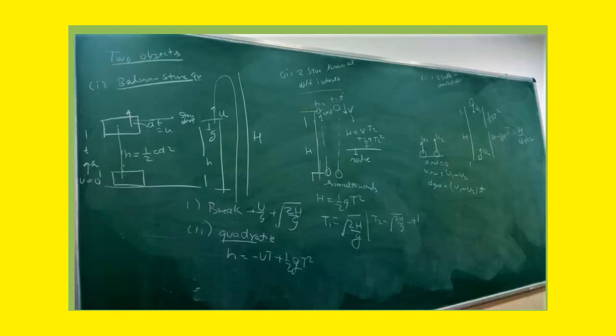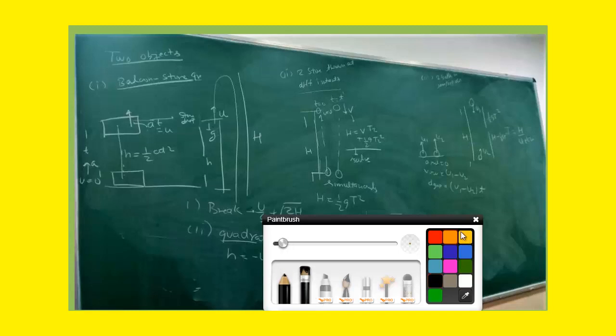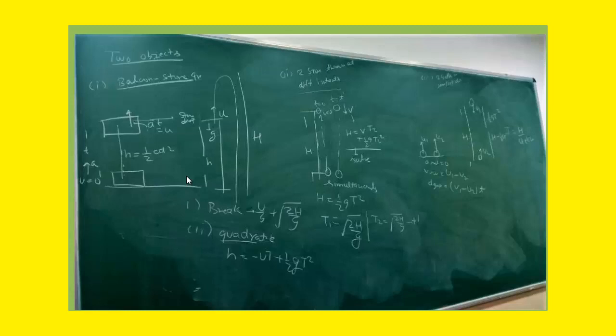When the stone is dropped from the moving balloon — just like if you were running on a bus and dropped a handkerchief, the handkerchief would first go forward with the same velocity due to the law of inertia — similarly, if the balloon is going up at 10 m/s, the stone also initially has 10 m/s upward velocity at the moment it is dropped.